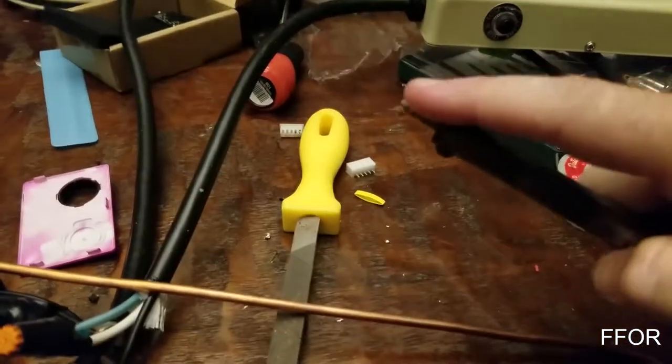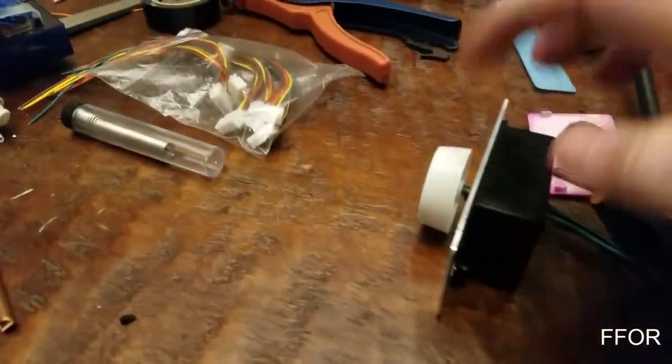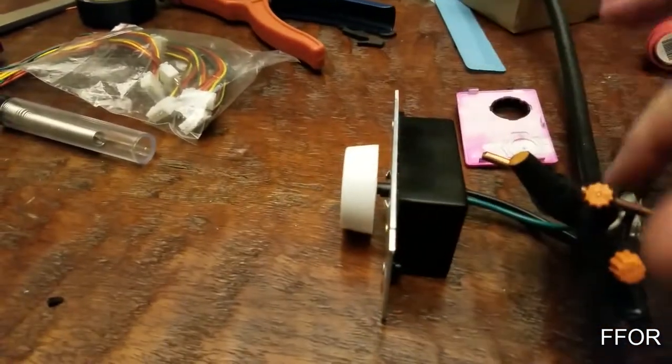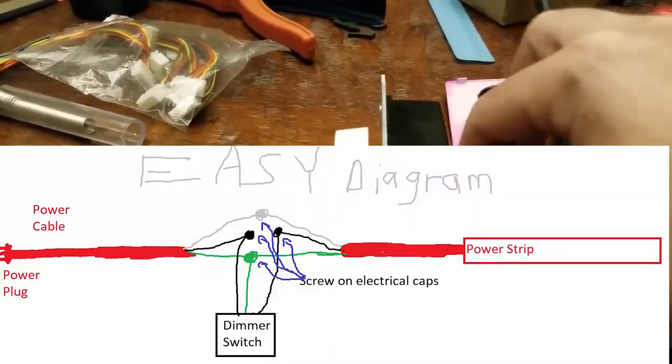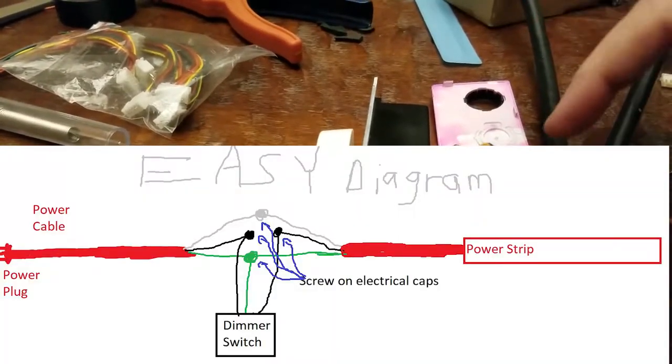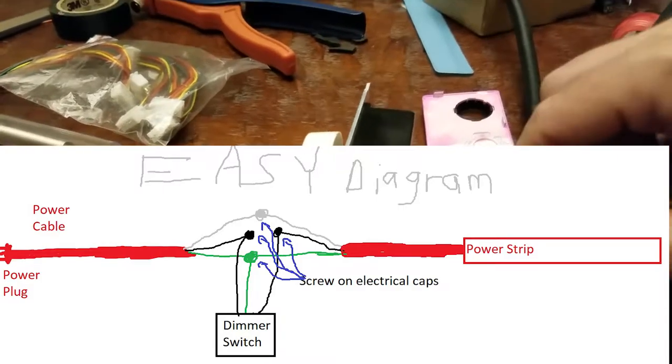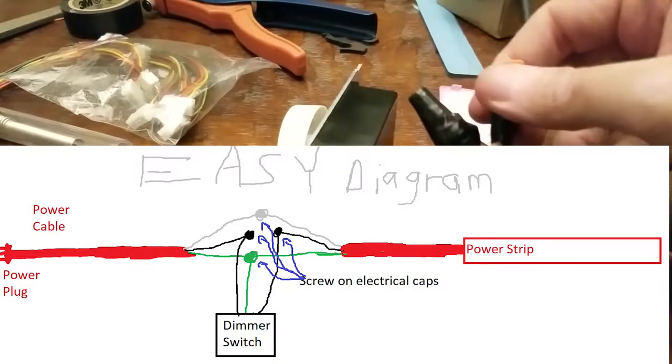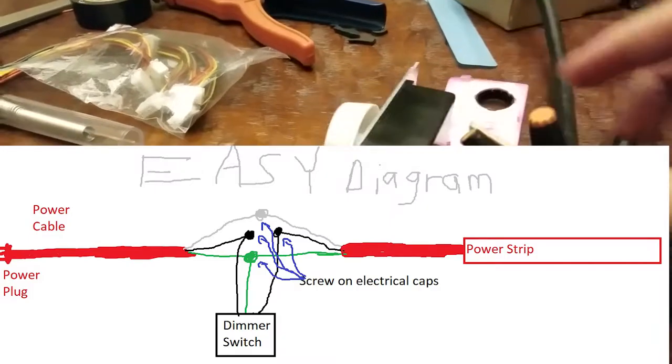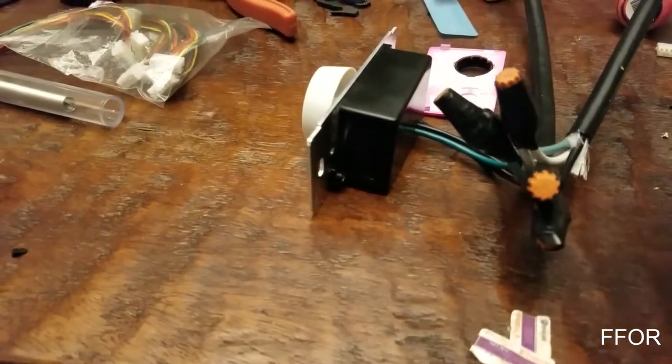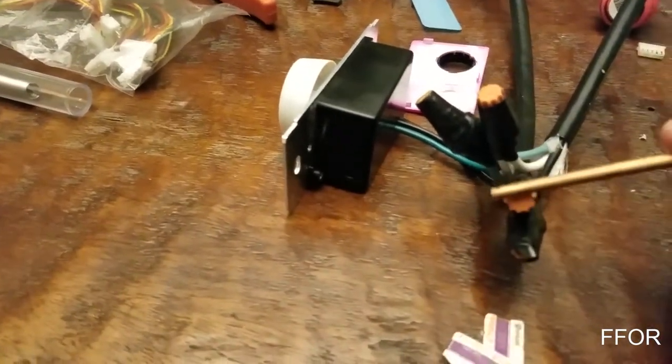Plug it in, tend the tip. You have to tend the tip while you're there. Pick up your dimmer, wire your dimmer: black to black in, black to black out, green green green, and white to white. If you can avoid cutting the white wire, don't cut it. Your dimmer will only come with three caps, so make sure you have a spare cap.